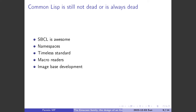The main implementation of Common Lisp is SBCL, which is awesome — it's fast, has very good extensions, and is the reference implementation today. The namespaces of Common Lisp are something I really like about the implementation. It has a timeless standard — it was standardized in the 90s and doesn't really need a new standard.